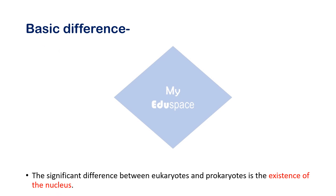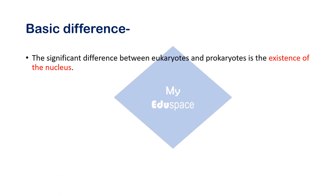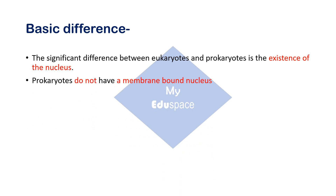Before getting in depth into the prokaryotic cell, let's first talk about the cell. As you all know, the cell is the fundamental unit of life. All living organisms, whether plants, animals, fungi, and so on, are made up of cells. There are only two types of cells: eukaryotic cells and prokaryotic cells. Prokaryotic cells are the simplest or primitive type, whereas eukaryotic cells are the complex or advanced ones.